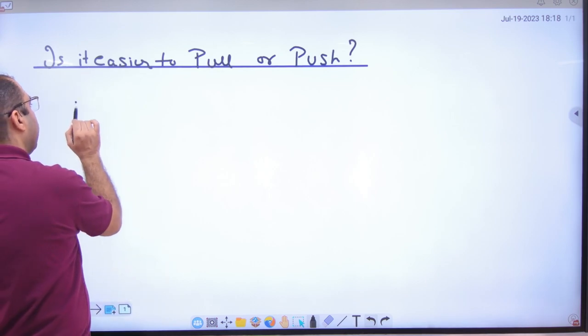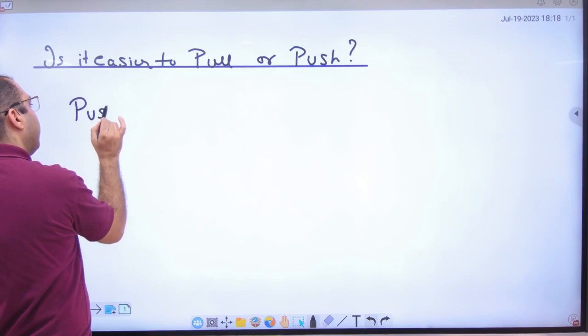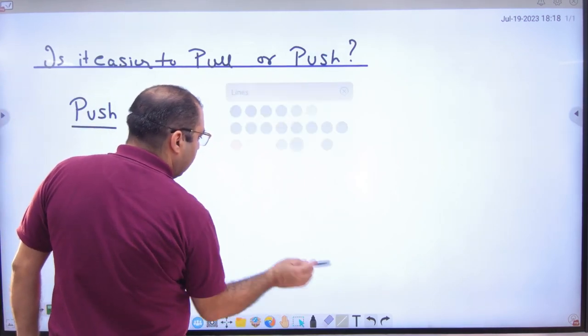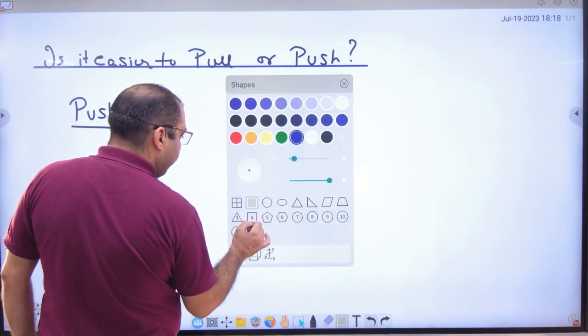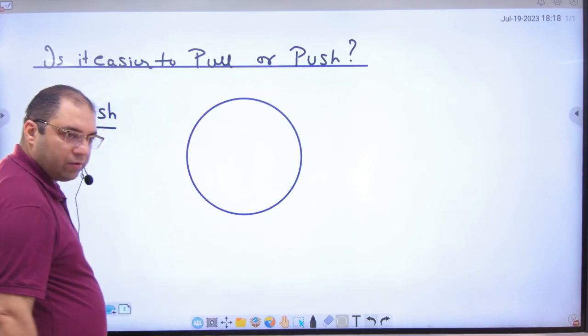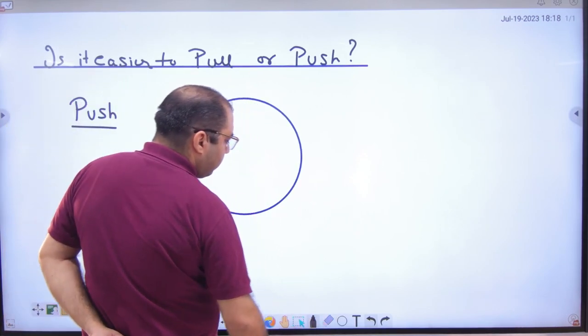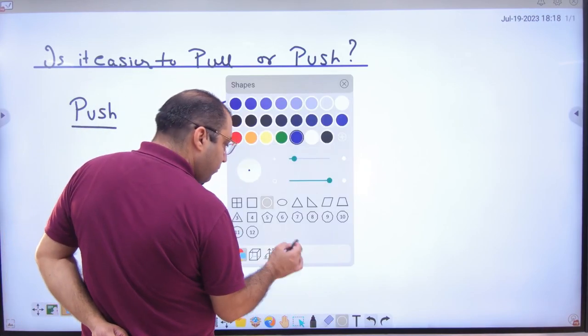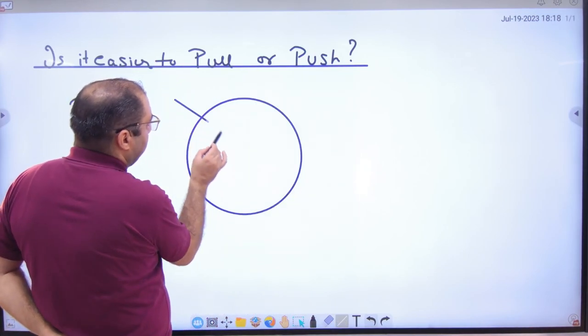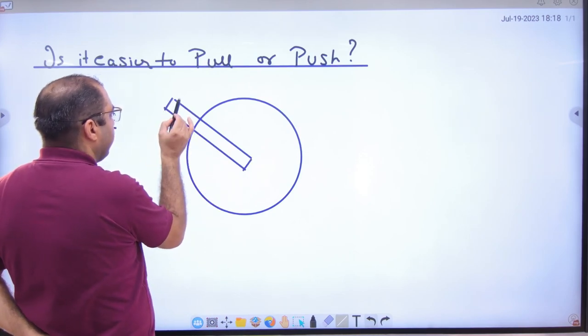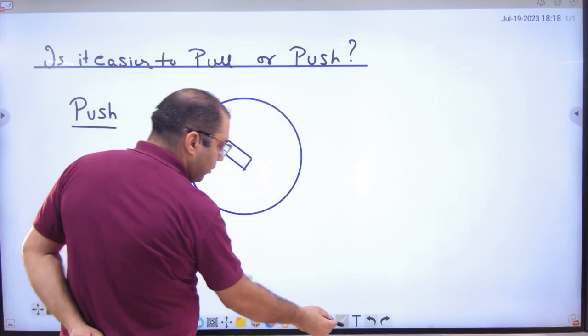First of all, let's take an example of push. In the push example, you have to make a diagram. In this diagram, we will push. This is a diagram. The machine is in the center. Now I will start to draw your vector.